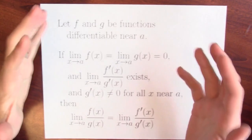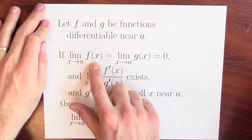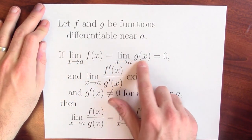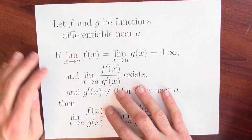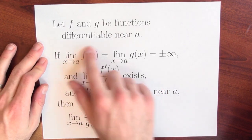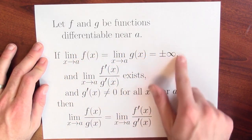We already know how to calculate limits that are a very small number divided by a very small number — a 0 over 0 form. We've seen L'Hôpital's rule for the situation when the limit of the numerator and the limit of the denominator are both 0. But it turns out that L'Hôpital's rule is also valid when the limit of the numerator and the limit of the denominator are both infinity.